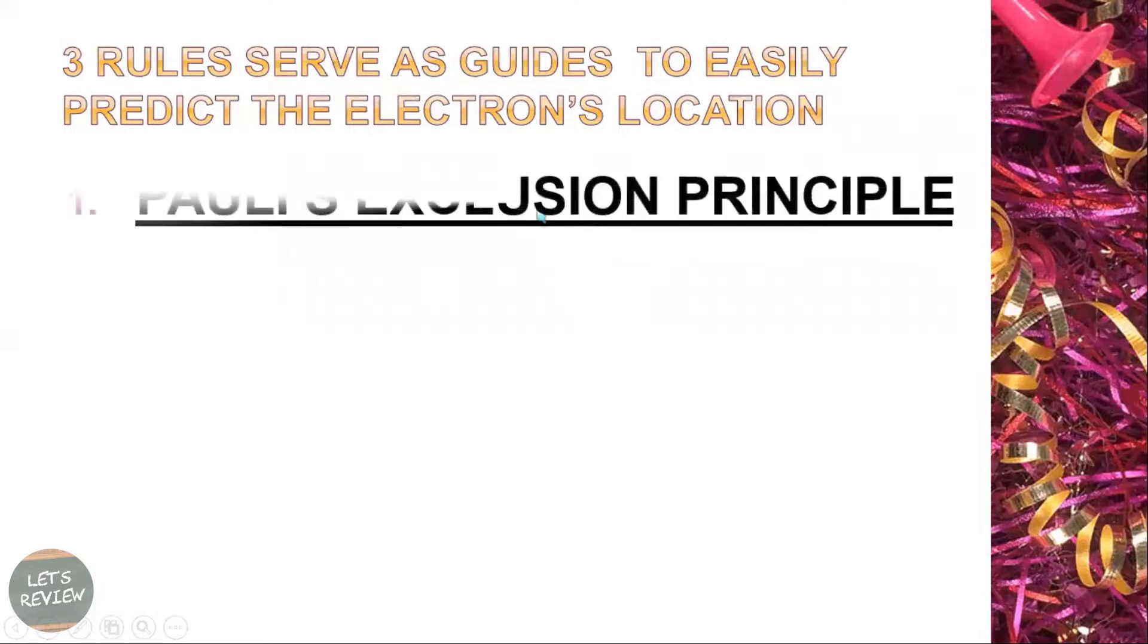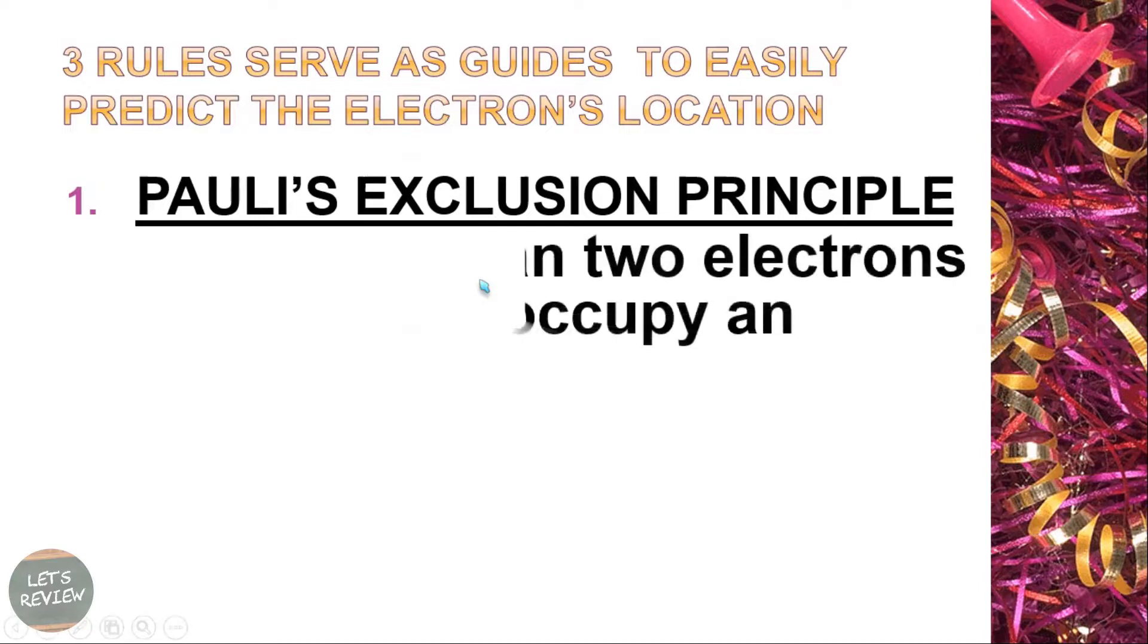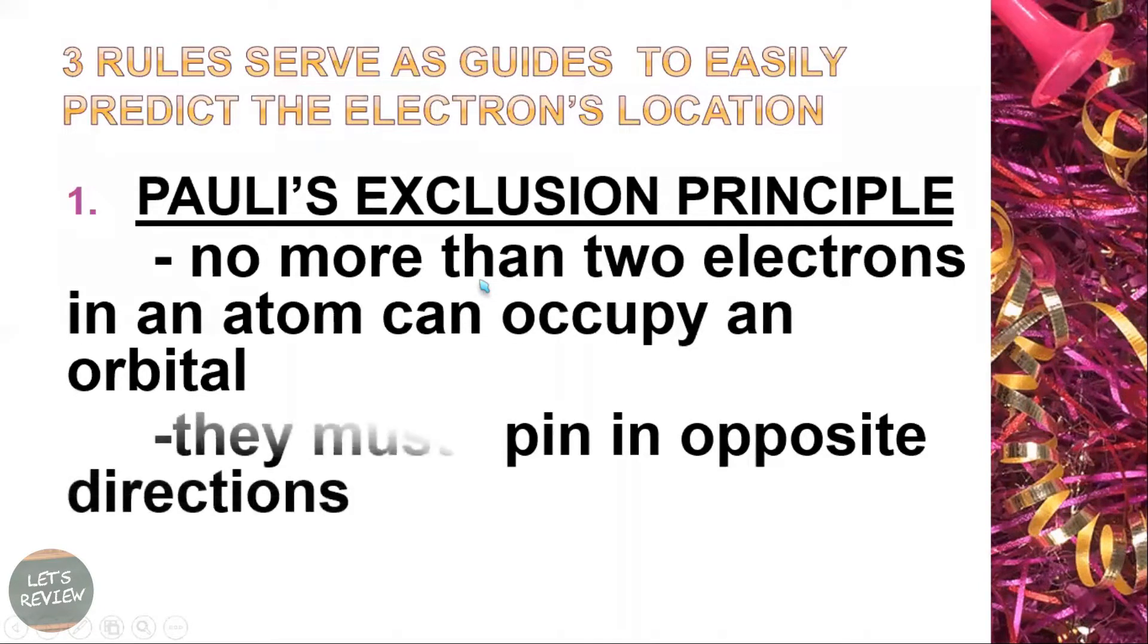In here we're going to follow the three rules to help us or to guide us to easily predict the electron's location. So that's our problem, predicting the exact location of the electron. The first on the list is the Pauli Exclusion Principle. It says here that no more than two electrons in an atom can occupy an orbital. They must spin in opposite directions.